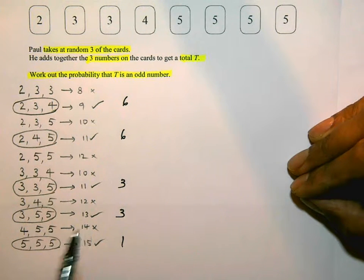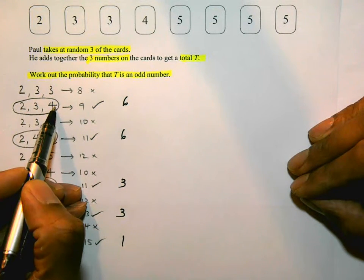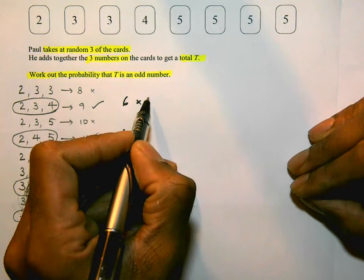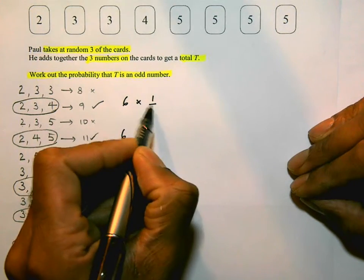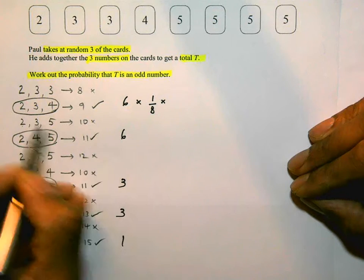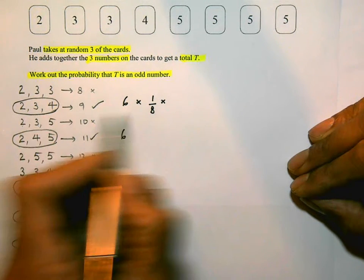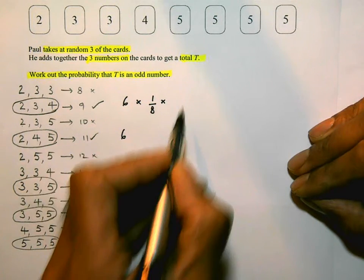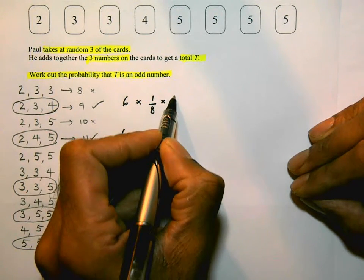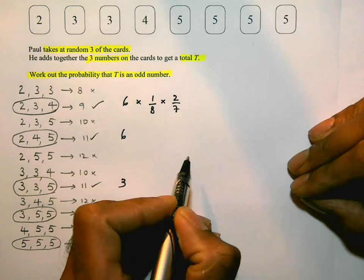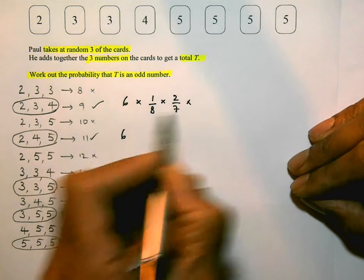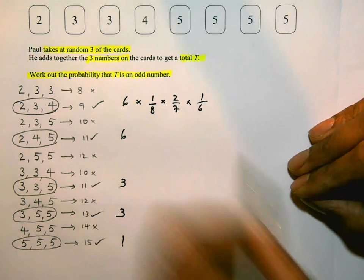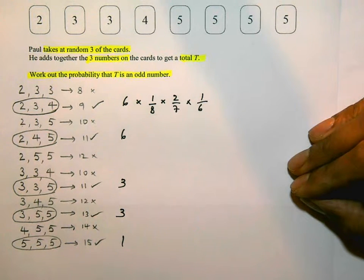Looking at the probabilities of picking 2, 3, and 4: the probability of picking a 2 — there's only 1 of them and 8 cards altogether — so 1/8. The probability of picking a 3 — there are 2 of them, but once you've picked the 2 as the first card, there will be 7 left behind — so that's 2/7. Then the probability of picking a 4 — there's only one 4, and there will be only 6 cards left — so that's 1/6.